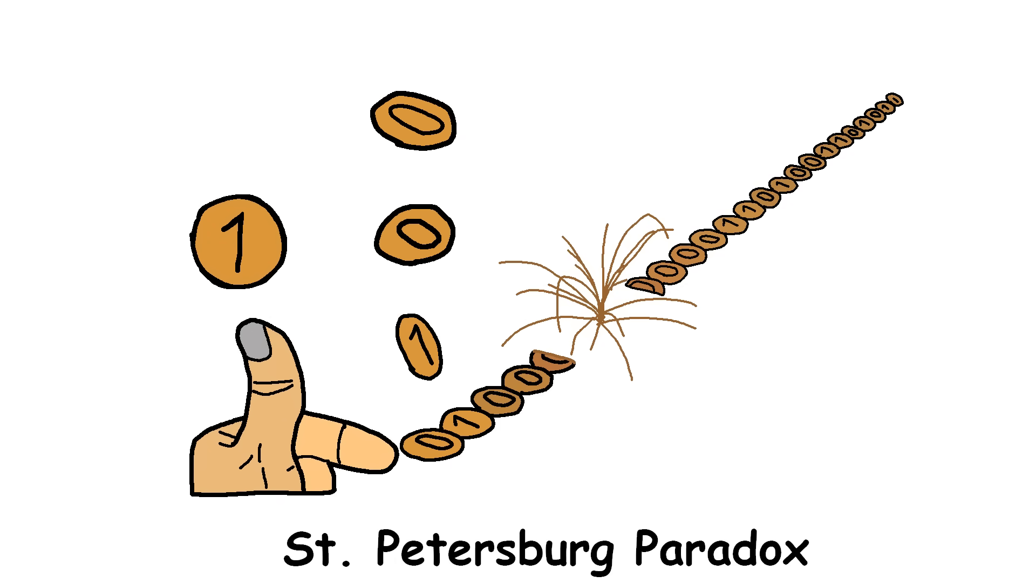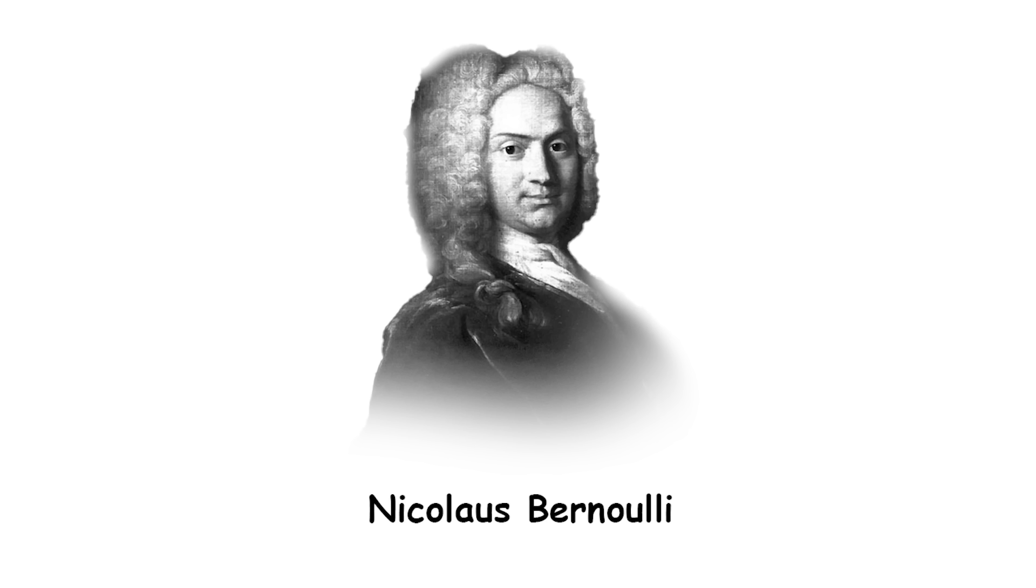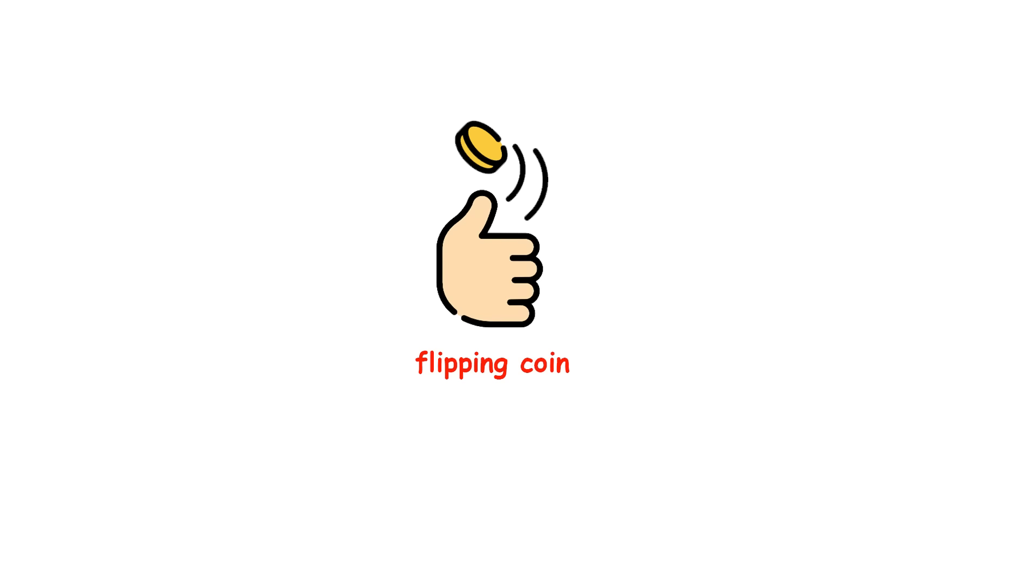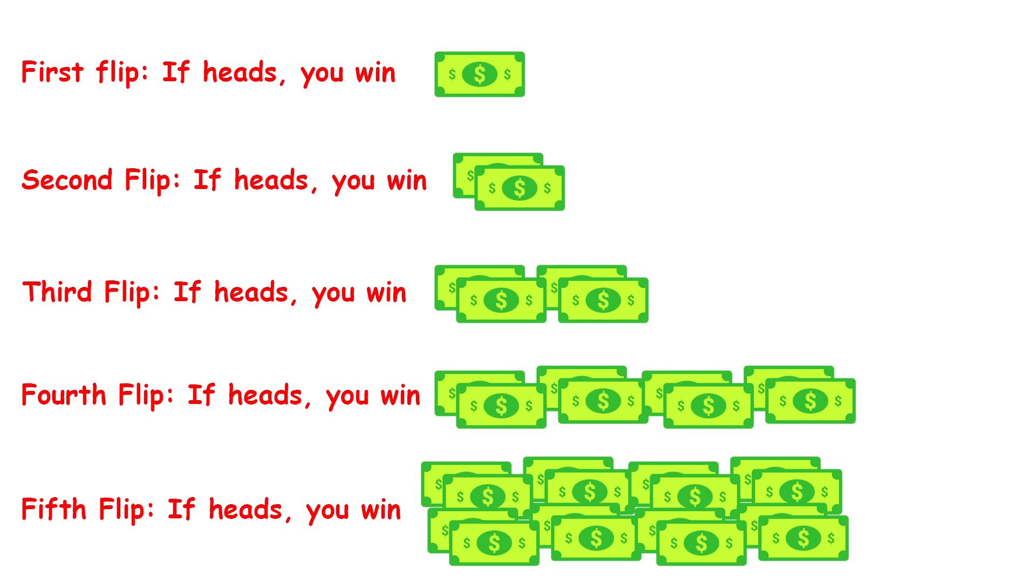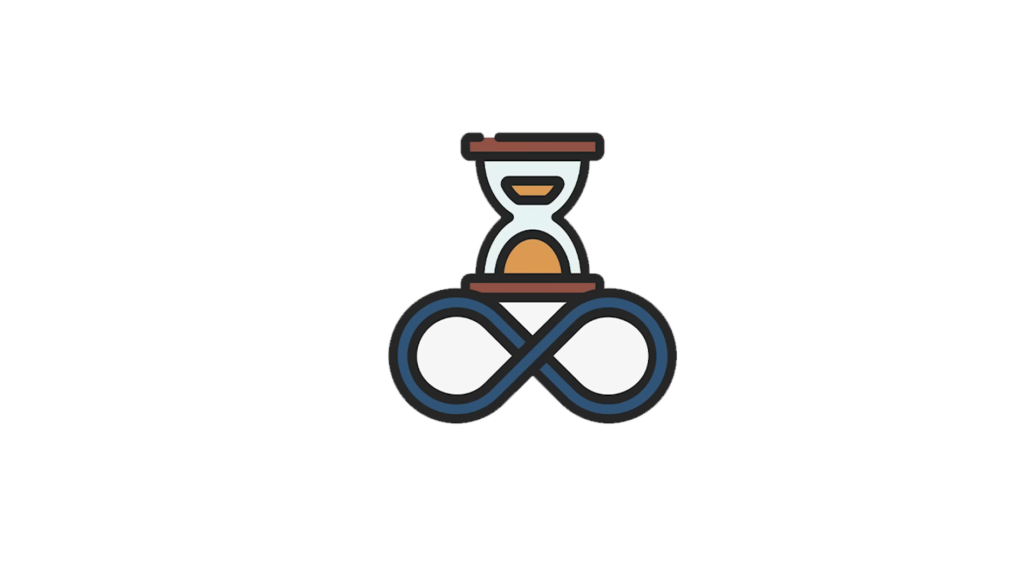St. Petersburg Paradox. In 1713, mathematician Nicholas Bernoulli put forth a question about the notion of expected value that came to be known as the St. Petersburg Paradox. Consider a game where you flip a coin. If it lands heads on the first flip, you win $1. If it lands heads on the second flip, you win $2, and so on, doubling your winnings each time it lands heads. This goes on ad infinitum.